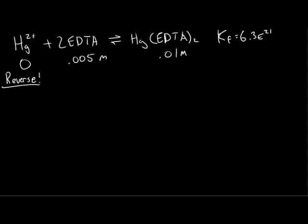If we reverse this reaction, we'll start with our mercury complex, mercury with EDTA2. This will yield Hg2+, and two pieces of EDTA. Now, rather than writing Kf for this reverse reaction, we're going to write something called Kd. This is called a dissociation constant.